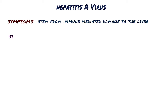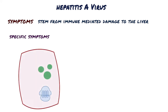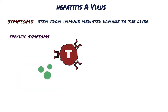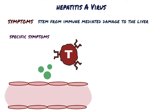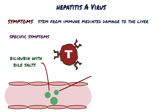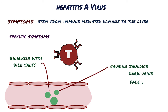There are also specific symptoms related to liver damage. When hepatocytes are destroyed, bilirubin with bile salts are released into the bloodstream and impregnate the tissues causing jaundice, which is a yellowish pigmentation of the skin, mucosa, and whites of the eyes. The bilirubin from the blood is filtered by the kidneys and ends up in the urine instead of the stool, making it dark while the stool becomes pale.